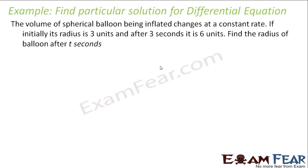The volume of a spherical balloon being inflated changes at a constant rate. The initial radius is 3 units, and after 3 seconds it is 6 units. Find the radius of the balloon at t seconds.